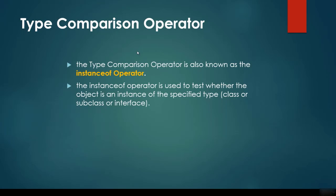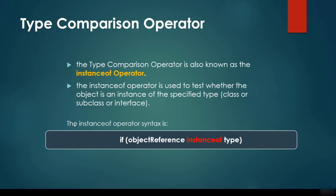Finally, we have the type comparison operator, also known as the instanceof operator. It is used to test whether an object is an instance of a specified type — such as a class, subclass, or interface. The syntax checks whether an object reference is an instance of a given type, returning true or false.